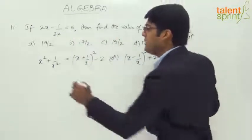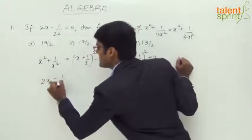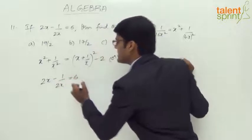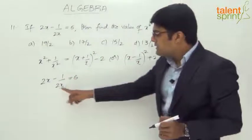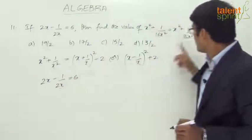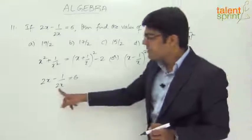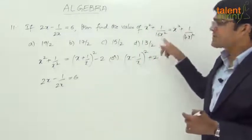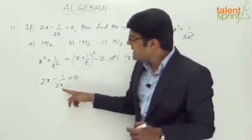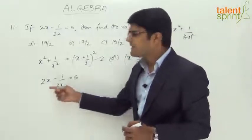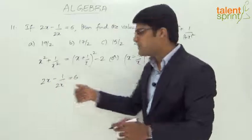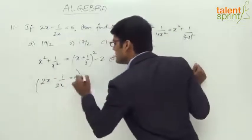So let us try to get that from this equation now. We have 2x minus 1 by 2x equals 6. Now I want this to be 4x. We have 4x in the denominator, so this denominator has to be 4x so that when we square we get 16x squared. So how can we get that? Divide by 2 or multiply the denominator by 2, which is nothing but dividing the equation by 2. So let us divide the whole equation by 2 and see what happens.